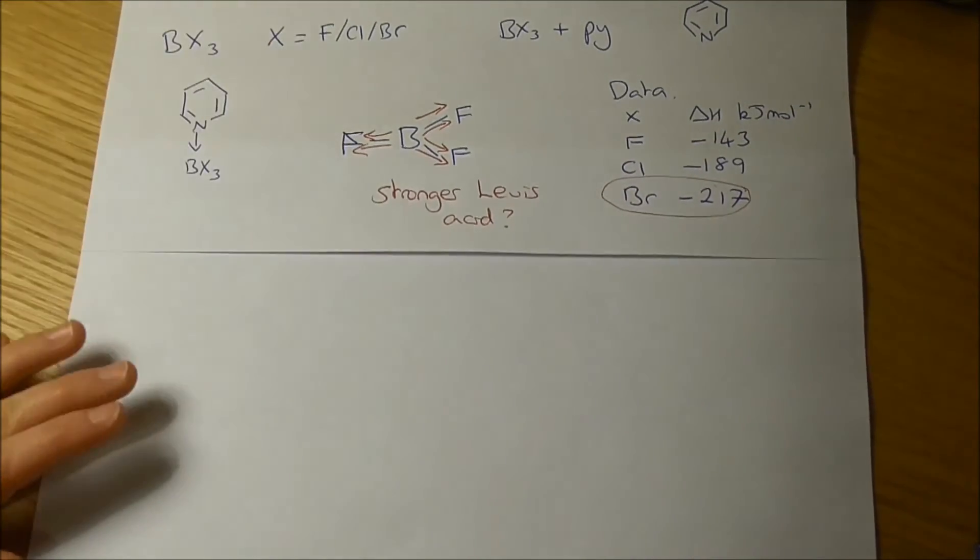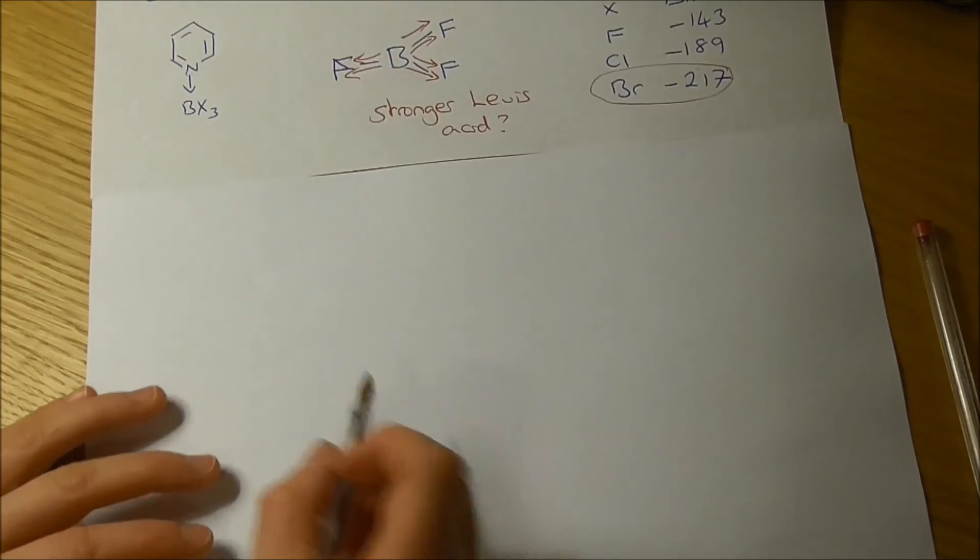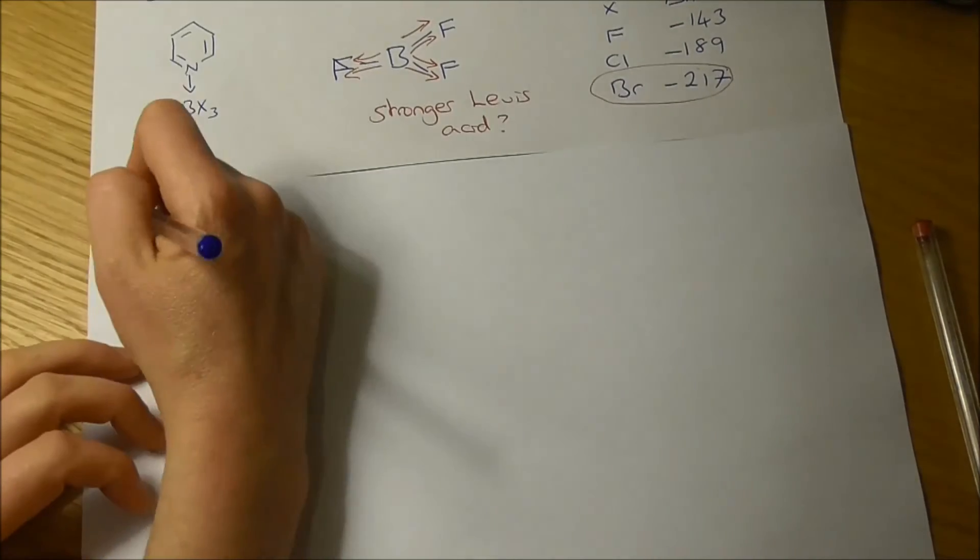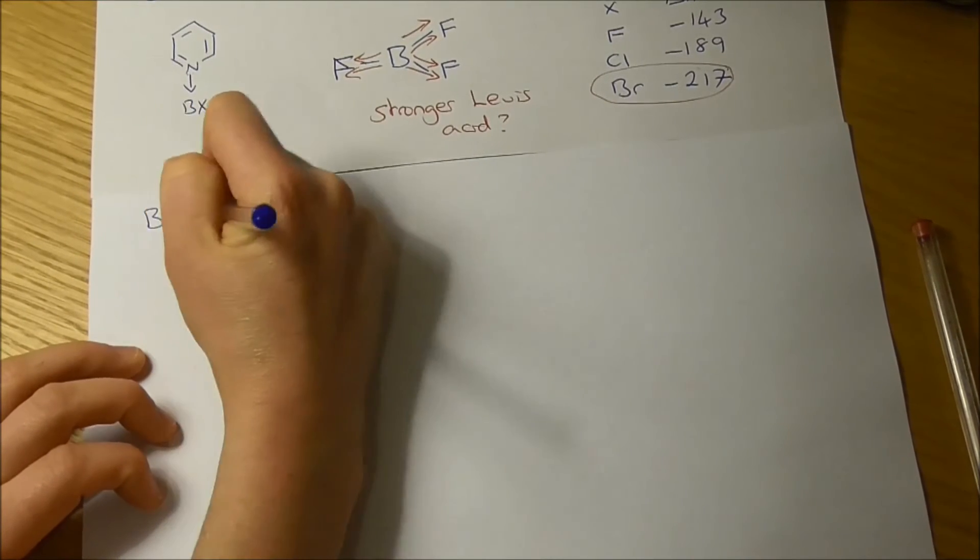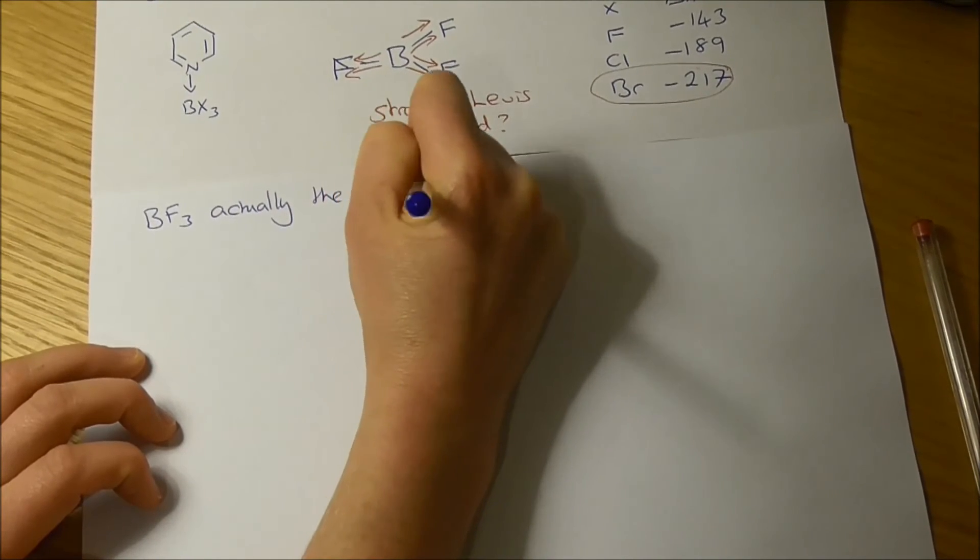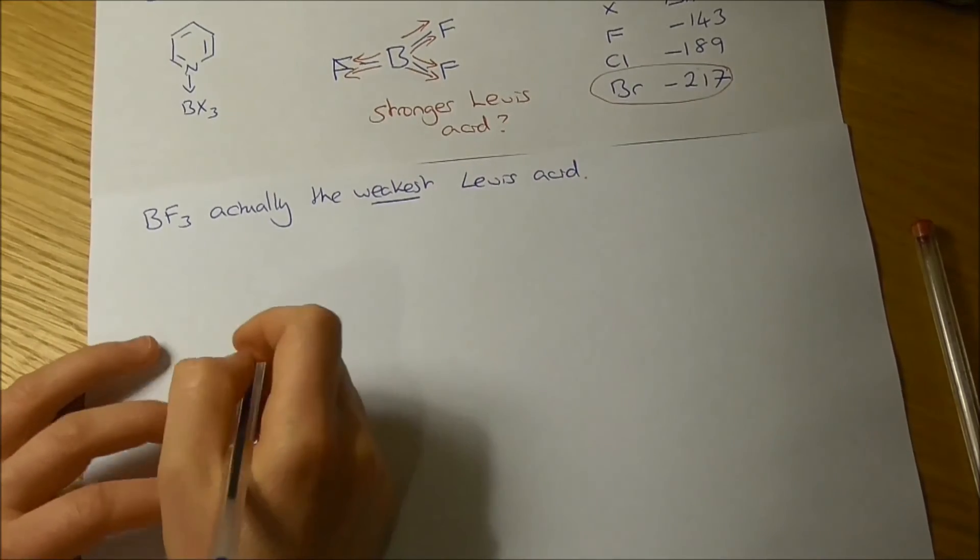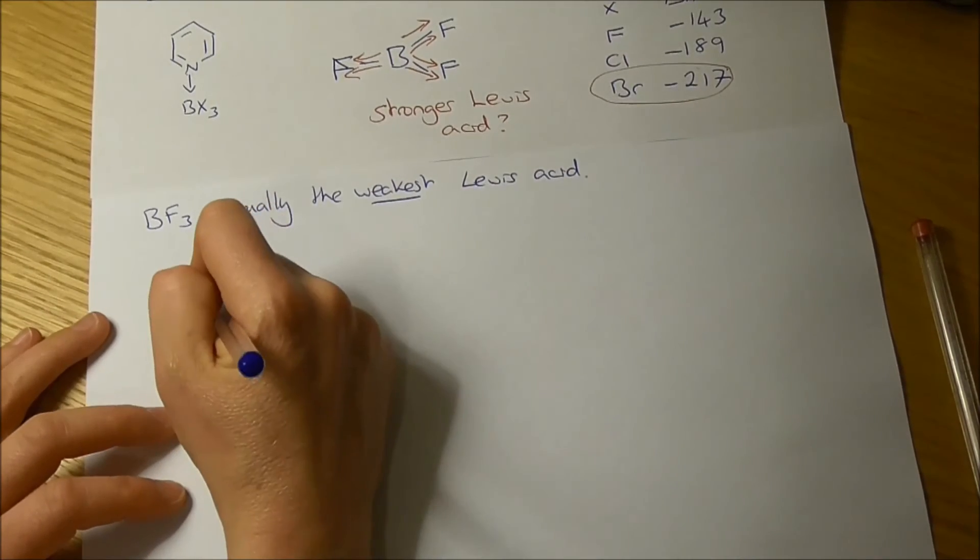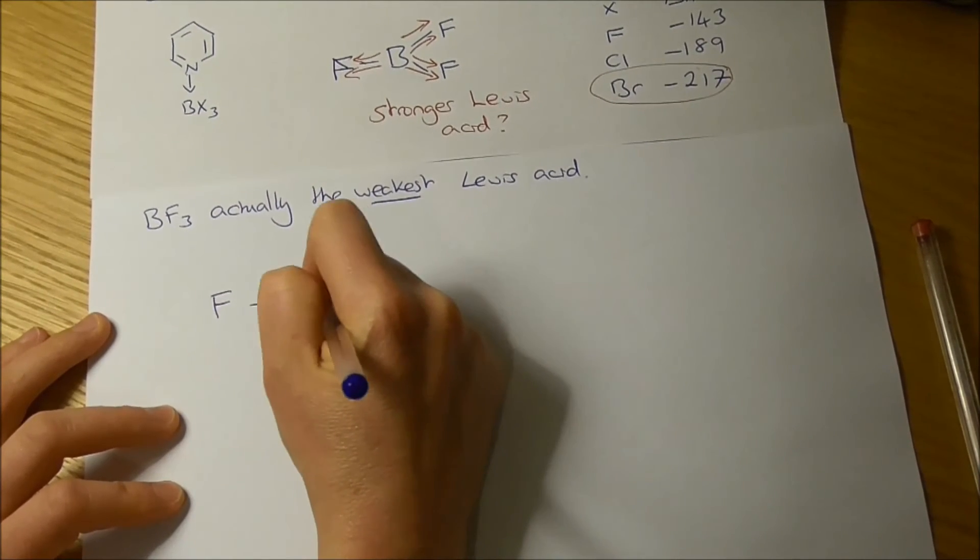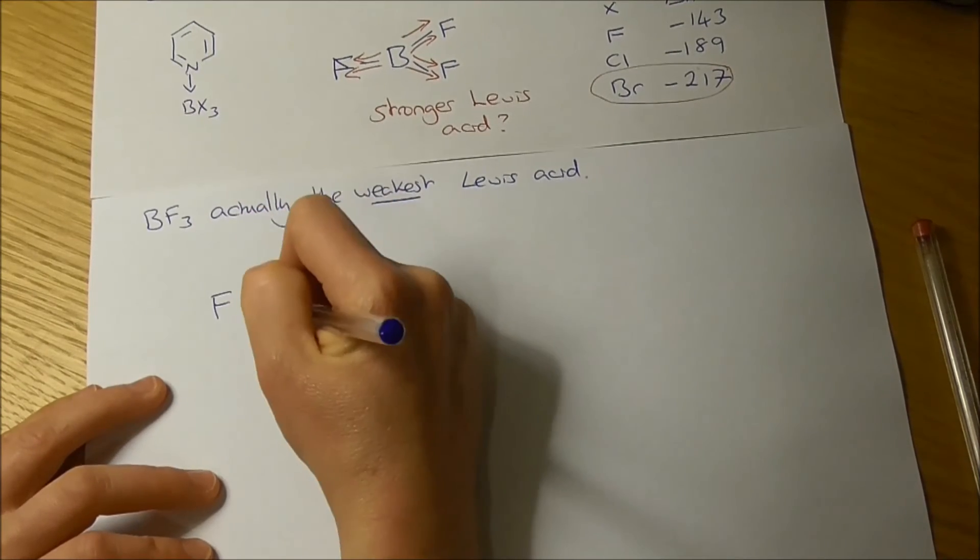So what's going on here? Something's happening to counteract this effect of electronegativity. So what's happening in this system to make that boron trifluoride actually the weakest Lewis acid? Well, if we draw our boron trifluoride out again, and we'll draw it perpendicular to the plane of the paper, so we can put in our empty p orbital here.